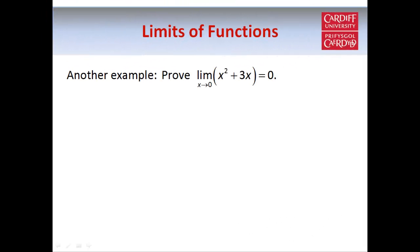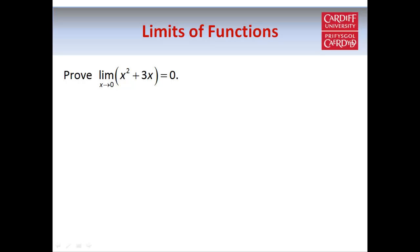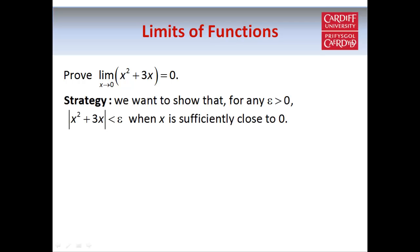Now let's look at one more example to show something slightly different. This time our function is x² + 3x, and we want to prove that it approaches a limit of 0 as x tends to 0. Using the limit definition, we need to show that given any positive value of epsilon, |x² + 3x - 0| < ε when x is sufficiently close to 0 — that is, when x is within a distance of delta from 0 — and we're trying to find a value of delta which causes that to happen.